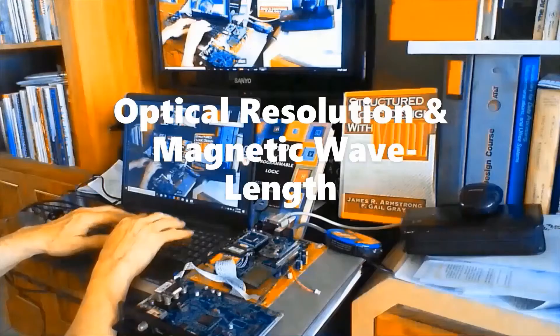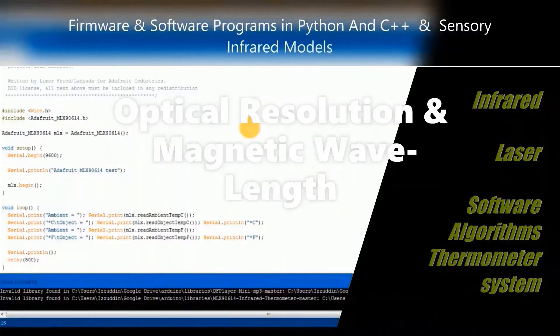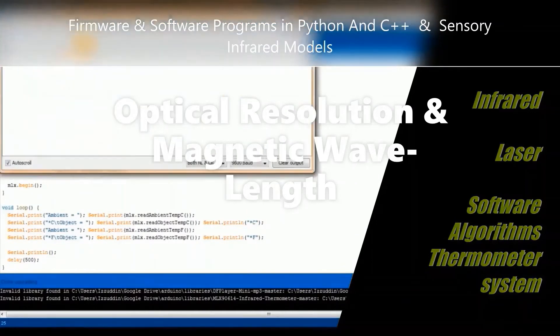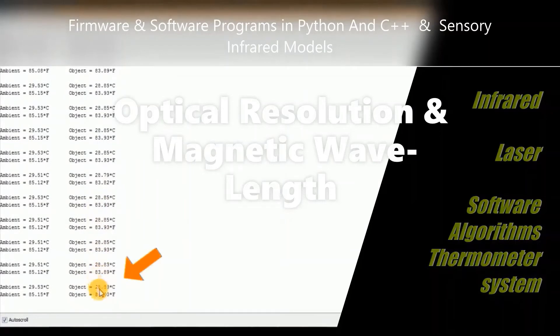Infrared is an electromagnetic wave with a wavelength between the microwave and visible light. The wavelength is between one millimeter and 760 nanometers, which is visible light longer than red light. Therefore, anything above absolute zero, the temperature minus 273.15 degrees Celsius, can generate infrared rays.